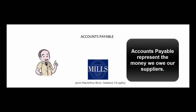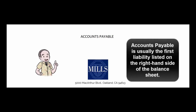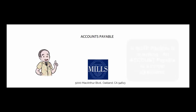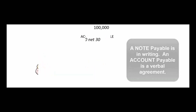Let's talk about accounts payable. It's usually the first liability listed on a company's balance sheet because it is a current liability. Your bills are probably due within 30 days, which means they're due within the next year. The difference between an account payable and a note payable is that a note payable is in writing and bears interest. An account payable is a verbal agreement with our suppliers.